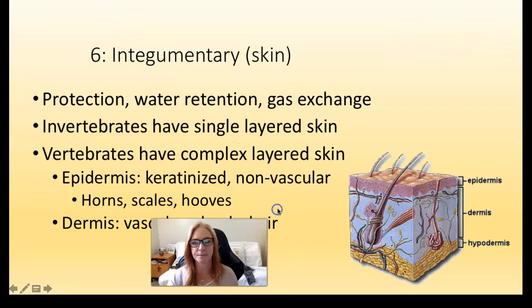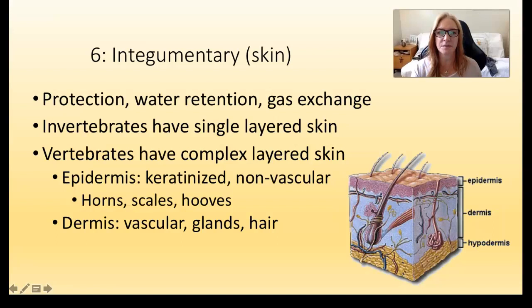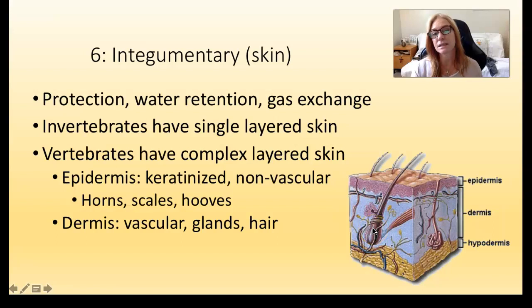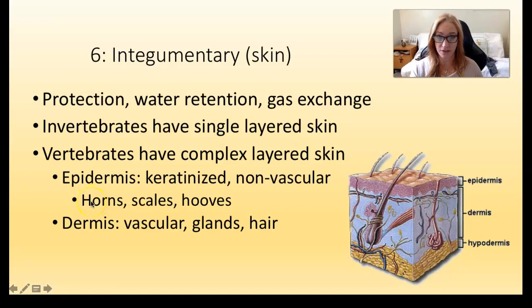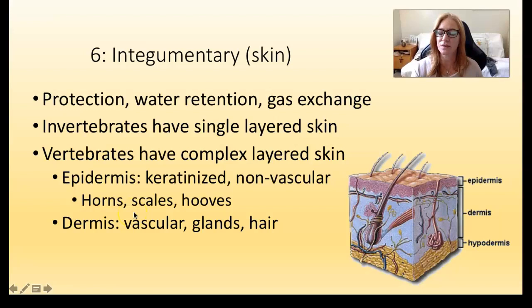The integumentary system is just what we're covered with, protecting us from the environment. Invertebrates have simple, single-layered skin. Vertebrates have complex-layered skin with an epidermis on the outside and a deeper dermis layer — the dermis is where we get the origins of hairs, skin glands like oil glands and sweat glands, and it's all enervated. It grows from the inside out and we slough off dead skin at the outside. Vertebrate skin is also where horns, scales, hooves, claws, and nails originate in the dermis. Think about feathers — feathers are crazy and they originate as a skin structure. We'll talk more about feathers when we discuss birds.